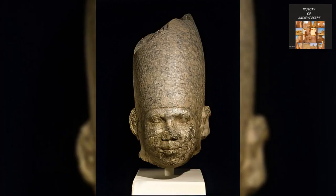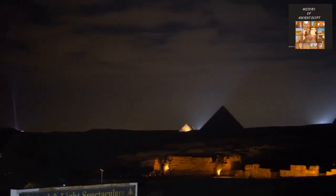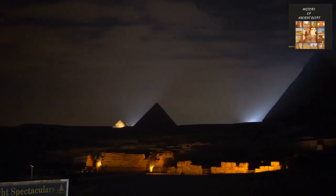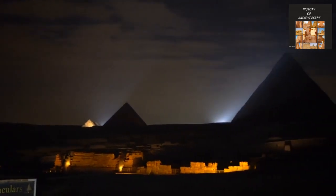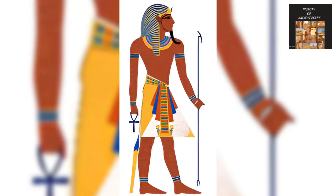The Enigma of Pharaoh Honey. In the annals of ancient Egyptian history, some rulers shine brightly, leaving behind towering pyramids and well-documented legacies. Others, like Pharaoh Honey, dwell in the shadows, their stories shrouded in mystery and enigma. Journey with us as we delve into the life and reign of Pharaoh Honey, an overlooked figure who played a pivotal role in the transition from the 3rd to 4th dynasty.